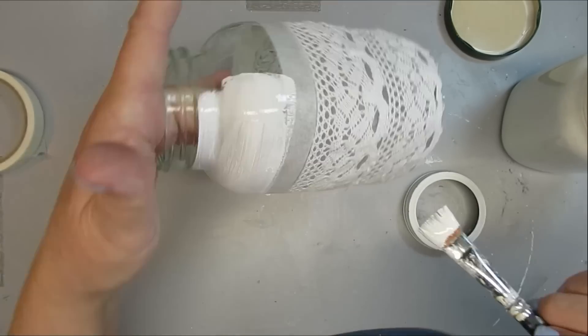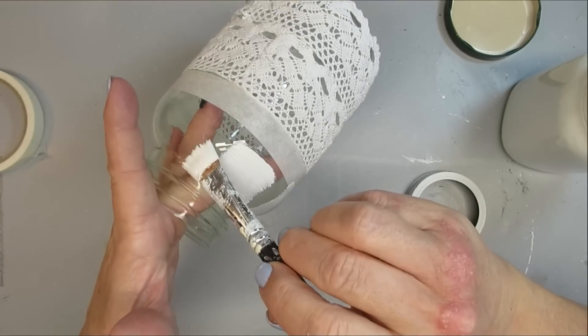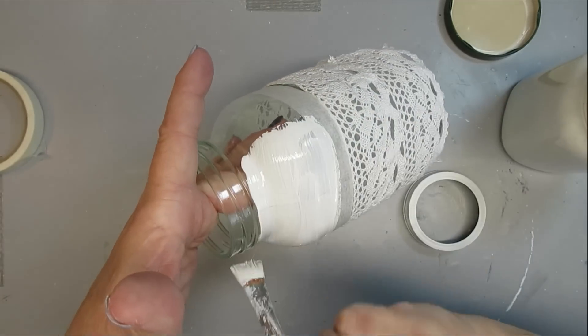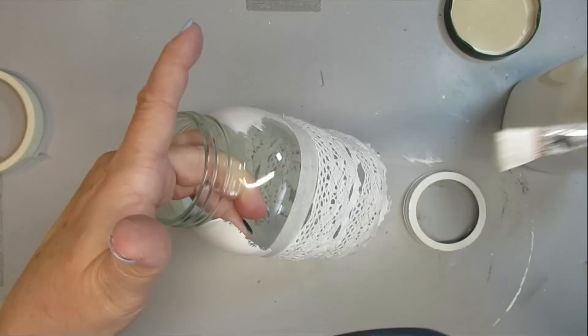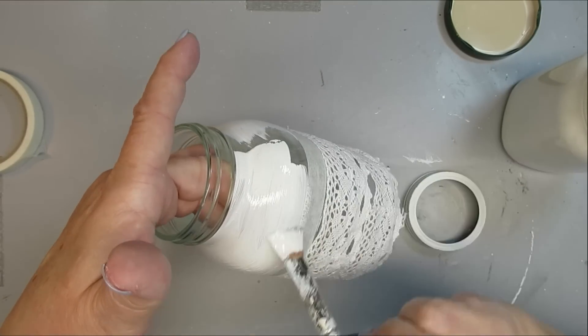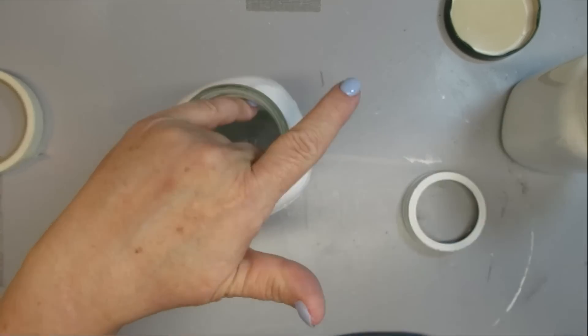Once I had the lace all done, I took a piece of masking tape and just applied it where the top of the lace was. Now I'm giving this small little section a couple of coats of white chalk paint. You don't have to do this part, but I just thought it would make it look a little bit different.